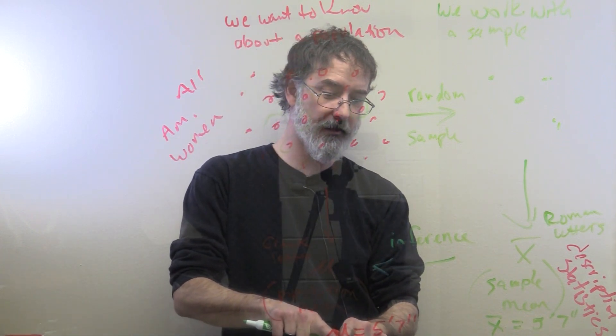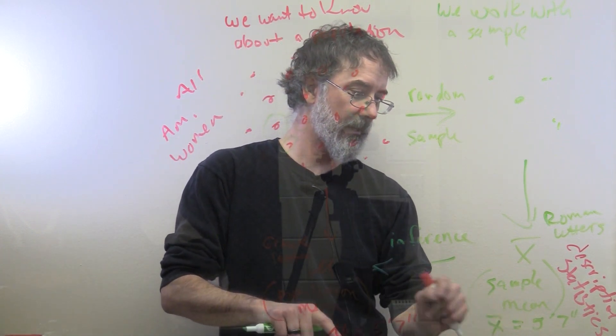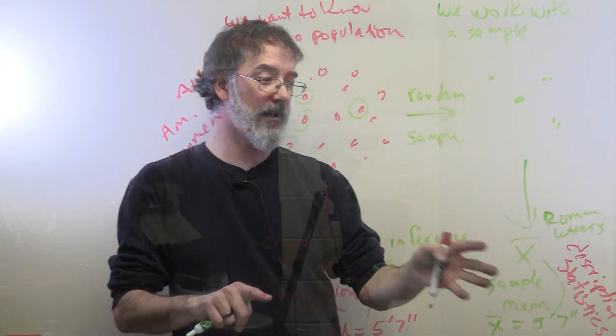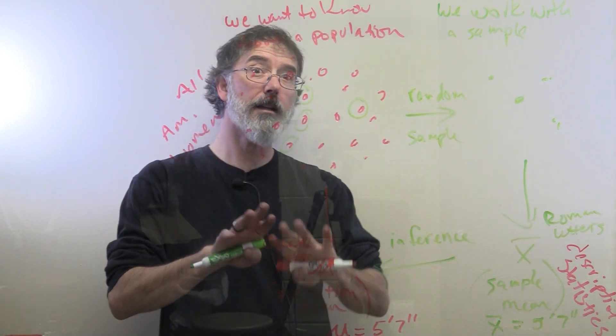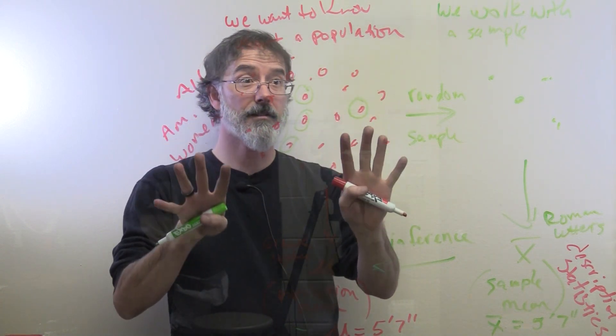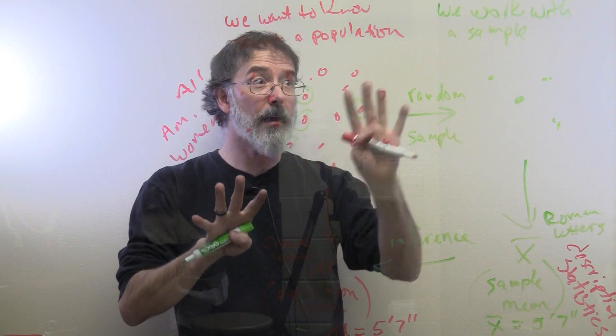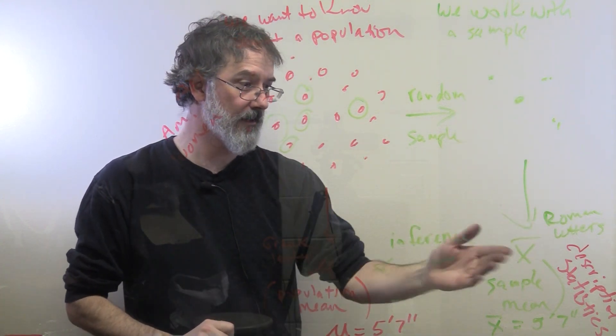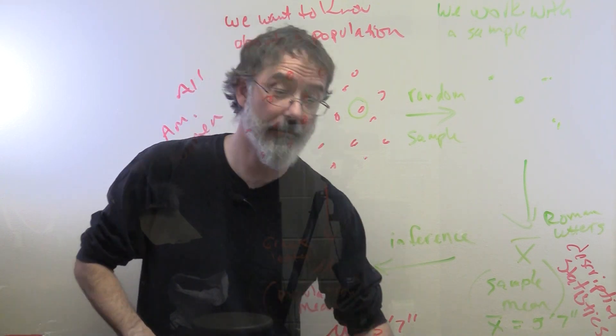So, the point prediction here for the population mean is the same as whatever the sample mean was. And that is our best guess at the population mean, given the information that we have. Ideally, we would measure all of the people in the population. In that case, it is called a census. But since we could not do that, we just had a sample, and that is our best guess at the population mean, is whatever our sample mean was.